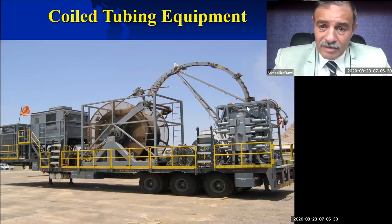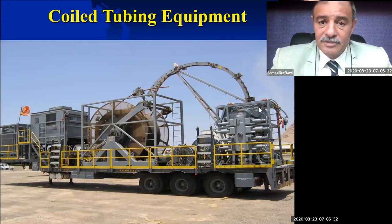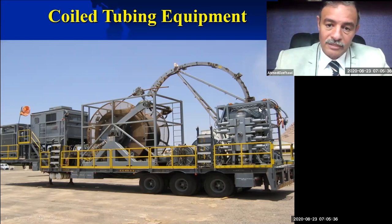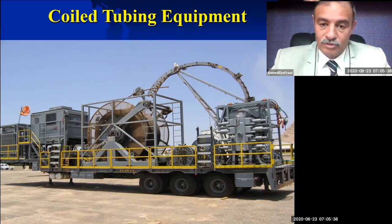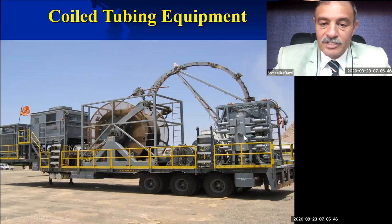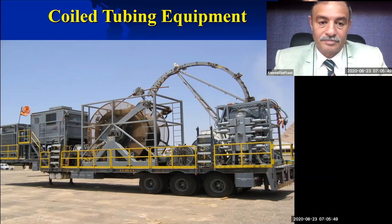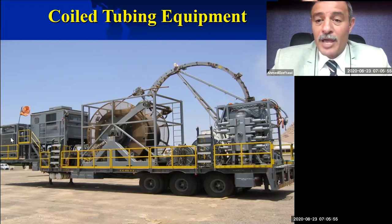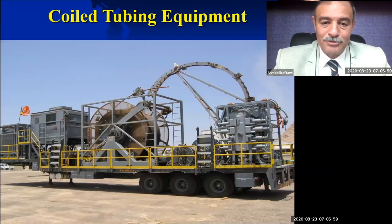Here we have what we call the injector, where we can inject pipe into the well and pull it out of the well. And this is one of the pressure control equipment — we call it the BOP, blowout preventer. From its name, it is to prevent blowouts. And over there we have the power pack which gives us the energy and power to do the job.